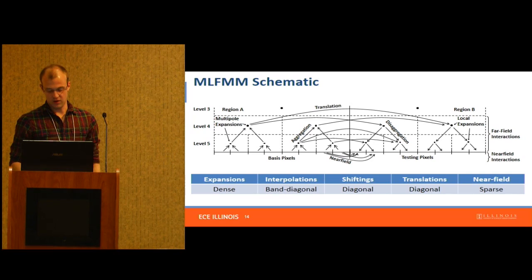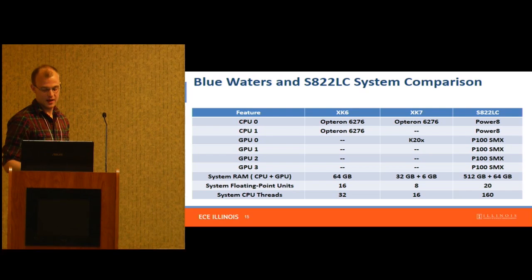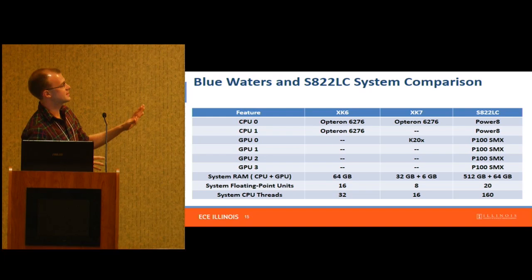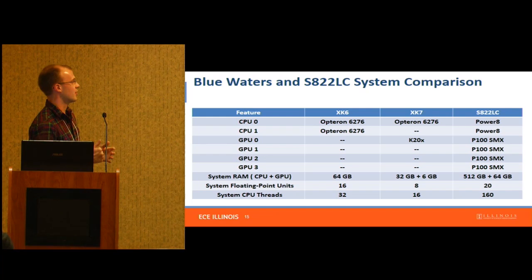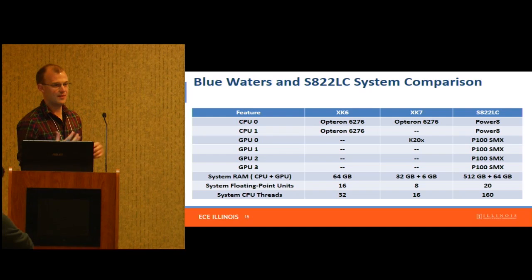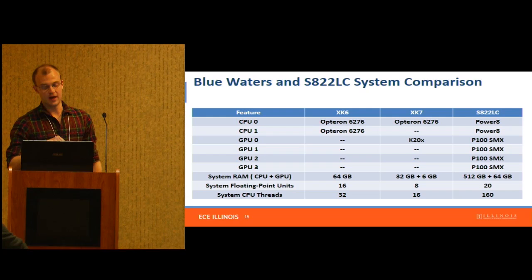Blue Waters has two different kinds of nodes. CPU nodes have two multi-core AMD CPUs, 64 gigabytes of memory, and 16 floating point units supporting 32 threads. GPU nodes — XK nodes — give you a K20 instead of one of those CPUs, so you have less RAM, some GPU RAM, and fewer CPU floating point units. But there's a good chance future supercomputers are going to have nodes that look more like a fatter node on the right.